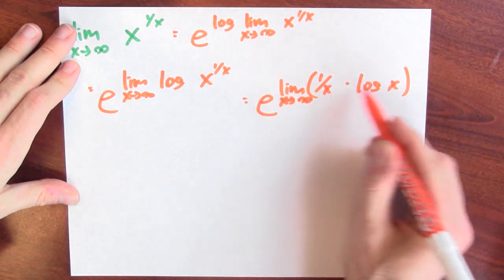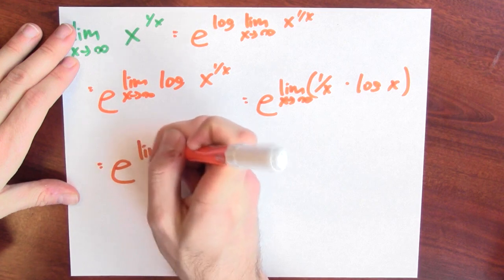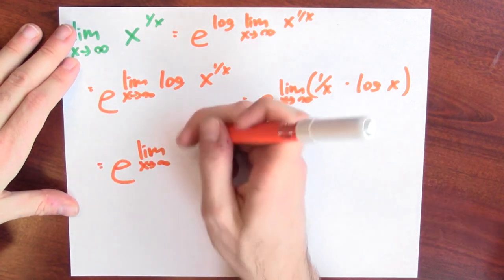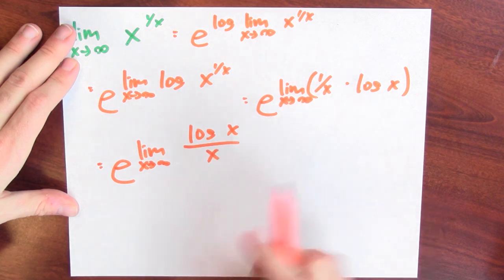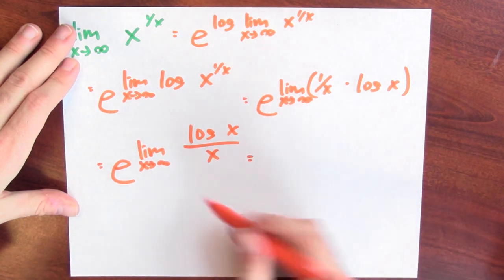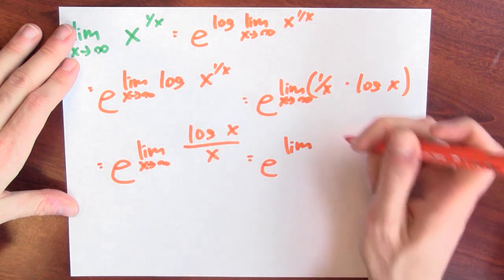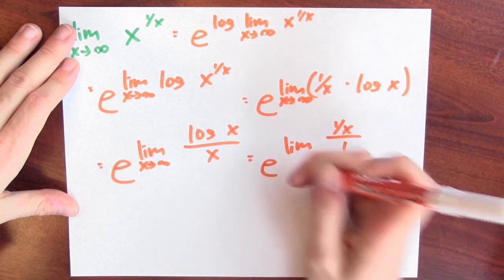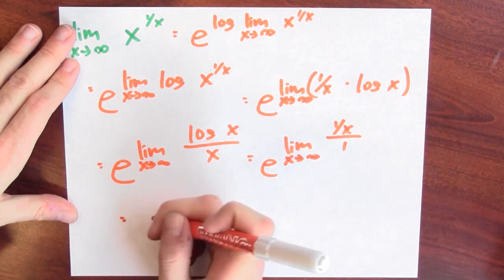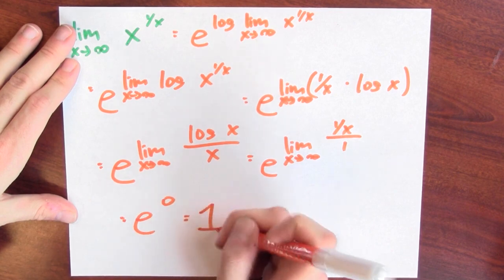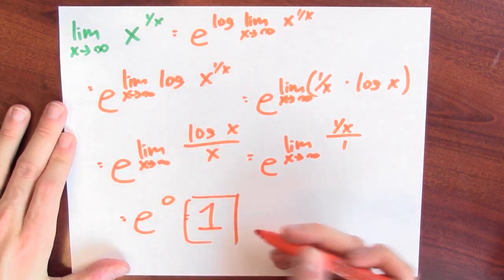To handle this, I rewrite it as e to the limit as x approaches infinity of log x over x — this is infinity over infinity, which L'Hôpital is okay with. So instead of taking this limit directly, I look at the ratio of the derivatives: the derivative of log x is 1/x, and the derivative of x is 1. So I look at the limit of (1/x)/1 as x approaches infinity. That limit is 0, and e to the 0 is 1. So the limit of x^(1/x) as x approaches infinity equals 1.